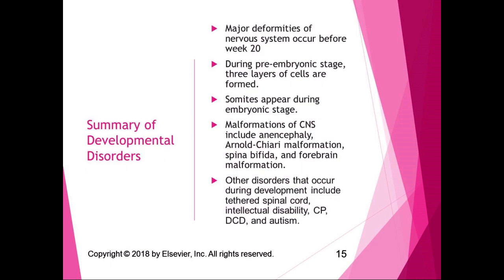In summary, major deformities occur before week 20. During the pre-embryonic stage, three layers of cells are formed. Malformations of the central nervous system include neural tube malformations, anencephaly, Arnold-Chiari malformation, spina bifida, and forebrain malformation. Other disorders during development include tethered spinal cord, intellectual disability, cerebral palsy, developmental coordination disorder, and autism. In physical therapy, the ones we deal with most are spina bifida and cerebral palsy, though you will encounter others as well.